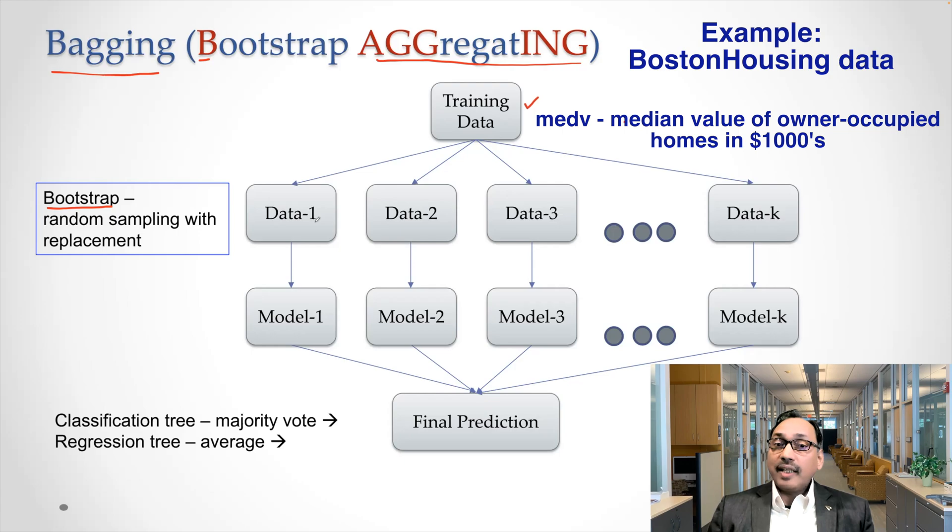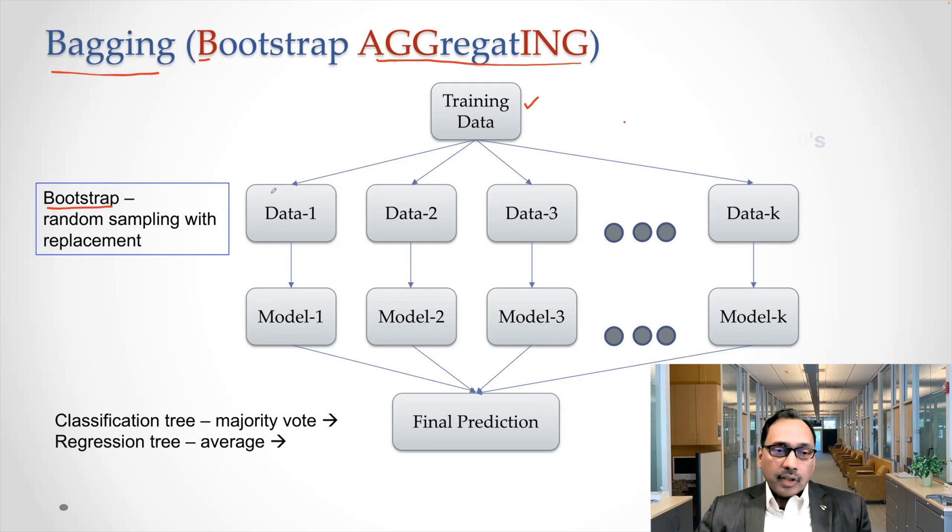So there are chances that some data points will repeat. They may be selected more than once in data one. And at the same time, there is a chance that MEDV value or a data point which is there in the training data doesn't get even selected. That's how data one is created, that's how data two is created and three.